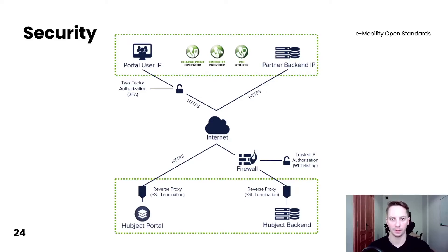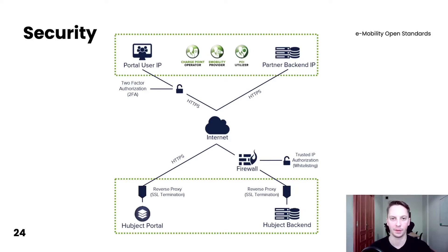The security mechanism is rather simple. Any partner backend platform will communicate with Hubject via a secured connection. Security is based on SSL certificates and IP whitelisting. The SSL tunnel guarantees confidentiality via encryption, integrity via checksums, and authenticity by using digital signatures and certificates. A reverse proxy handles central HTTPS encryption and authentication of all incoming connections. Both the reverse proxy and firewall provide access control by using whitelists, which grant access only to specific IP addresses.